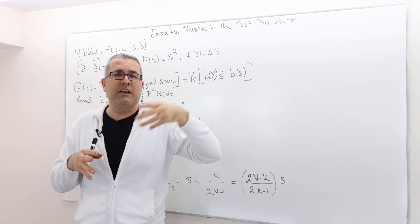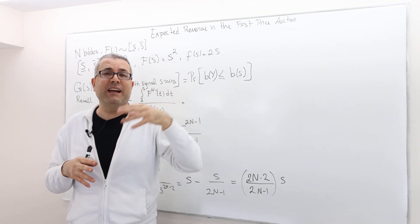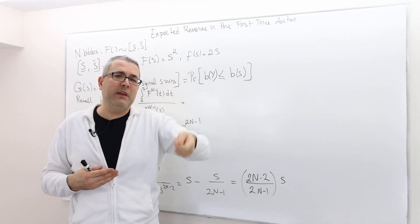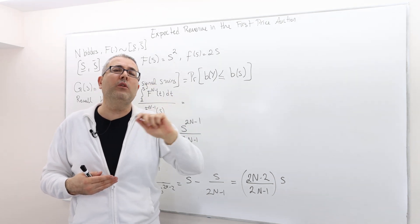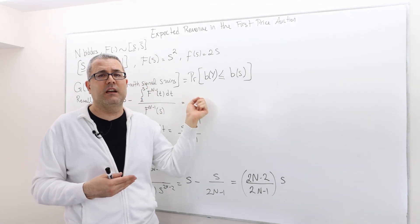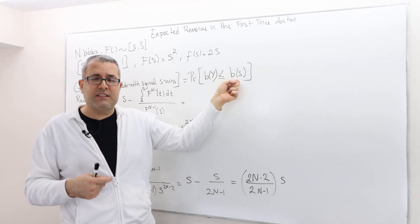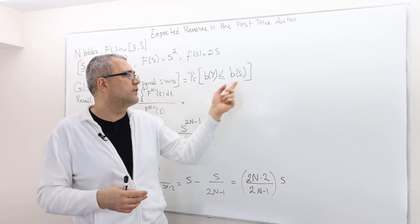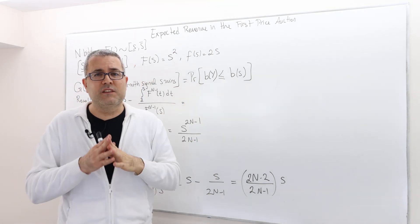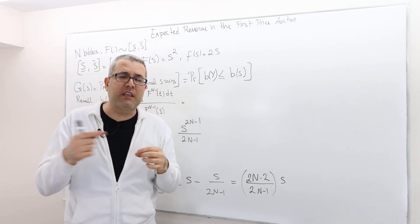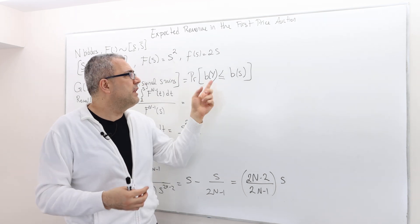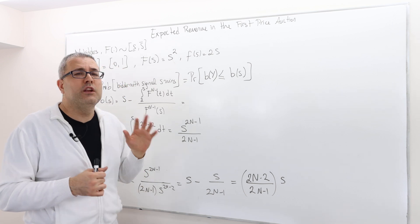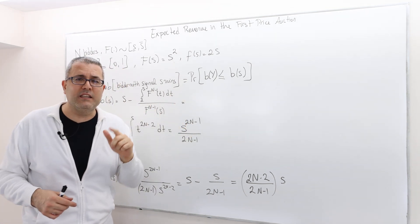We are looking at equilibria where bids are increasing functions, so if you have a higher valuation you should be bidding higher. Given that b is an increasing function, all I have to care about is the bidder with the second highest valuation, because all other bidders will bid less. This is why we look at symmetric Bayesian-Nash equilibrium — the b functions are the same for everyone. So if b(y) ≤ b(s), that means y ≤ s.